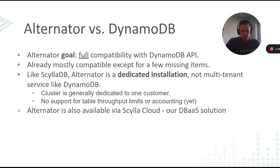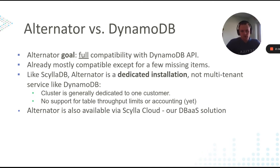So how does Alternator differ from DynamoDB? Ideally we want it to be fully compatible; however, there are still some things we don't support. On the other hand, we also provide a couple of extra capabilities. First of all, ScyllaDB is just an application which you can download or even compile yourself and run locally. It also means that we usually expect a dedicated installation, not a multi-tenant giant like DynamoDB. Thus, we also don't yet implement all capabilities like throughput limits or charging per byte, because the server can simply run standalone, not only as a service.